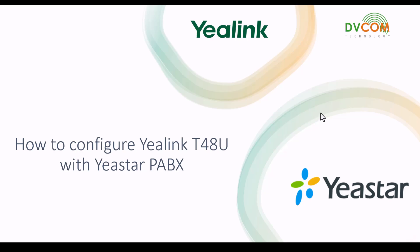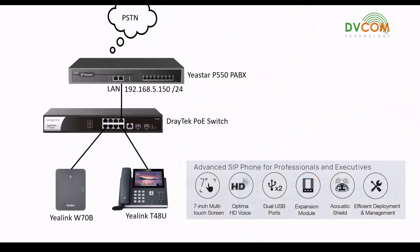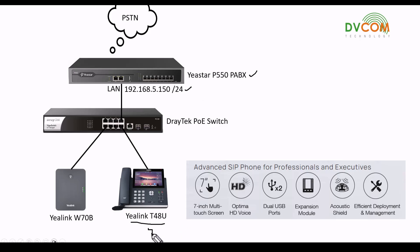Before you do the configurations, let's check my setup. I have a Star P550 which is the PABX, configured at 192.168.5.150, connected directly to my network switch. From the network switch I have connected my Yealink T48U IP phone, and I enabled DHCP in the Star P550 PABX, so the IP phone got the IP address 5.200. You can see the IP address it picked up in my previous video.